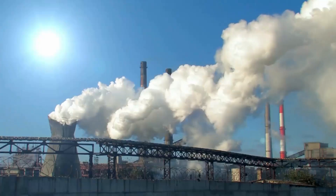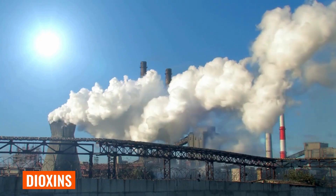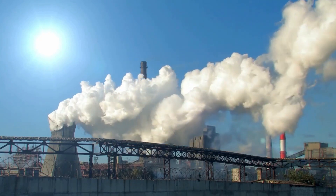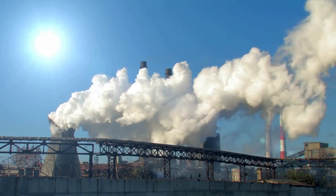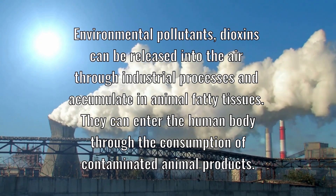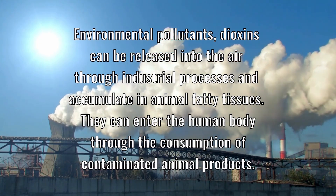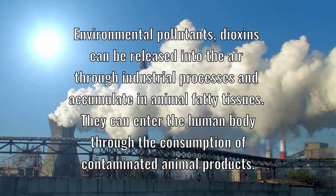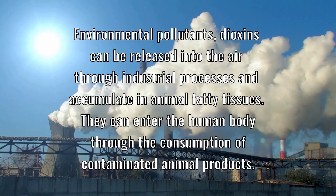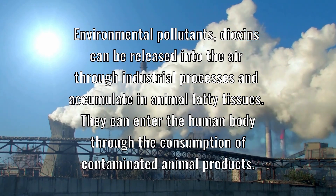Next we have dioxins — environmental pollutants that can be released into the air through industrial processes and build up in animal fatty tissue. They can enter the human body through consuming contaminated animal products.